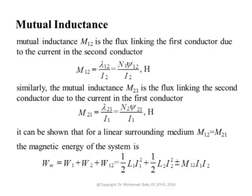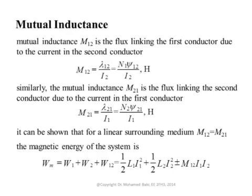By definition, the mutual inductance between two circuits — two coils — is M12. M12 is the flux linking the first coil due to the current in the second coil. So the definition of this mutual inductance is Lambda12 divided by I2. After you get the flux linkage, you divide it by the current that caused the magnetic flux. M12 is the flux linking the first coil due to the magnetic field of the second coil, divided by I2. This equals N1 × Ψ12 as explained earlier.